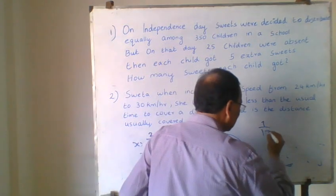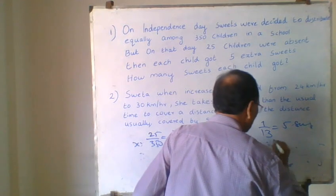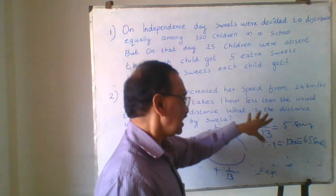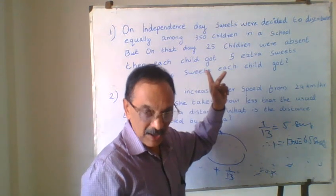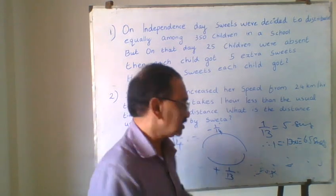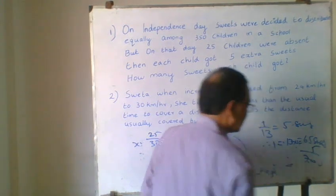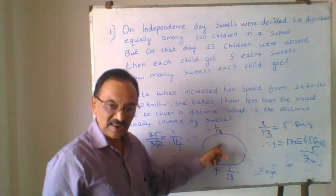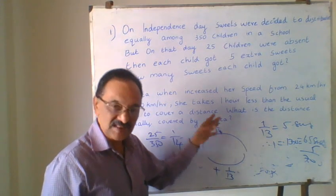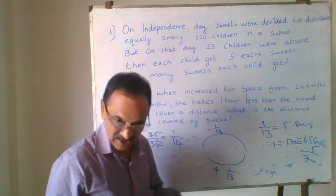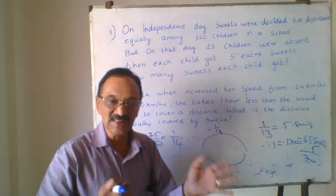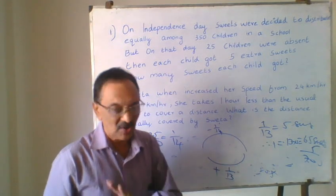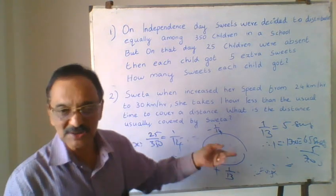So 1/13 more sweets is equal to 5 sweets, therefore 1 (the whole) is equal to 65 sweets. That is the number of sweets originally planned per child. Now each child got 5 extra, so 65 + 5 = 70 sweets total. So we solved this problem using a different approach — product constancy.